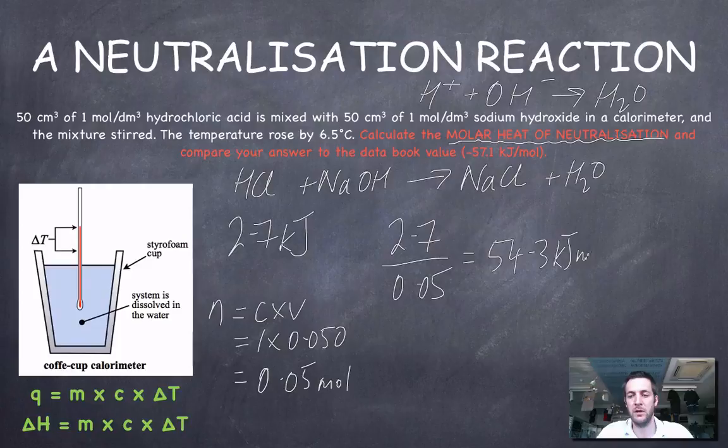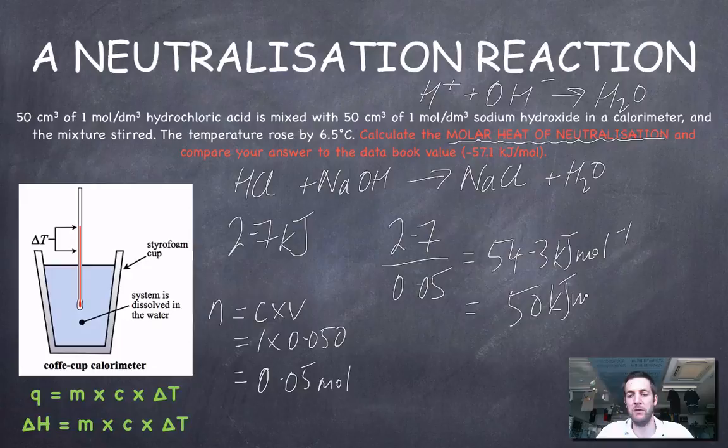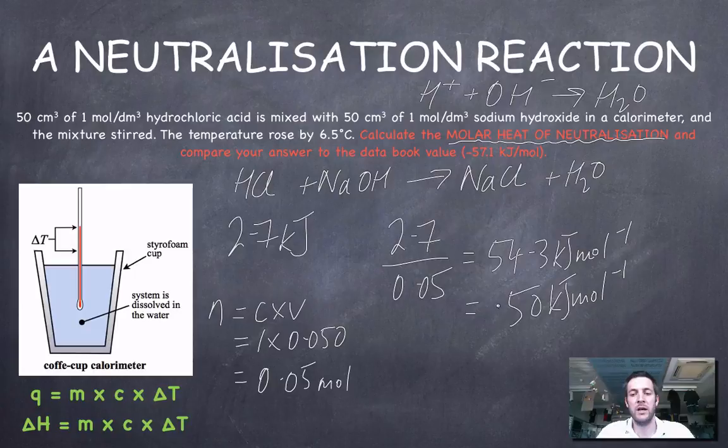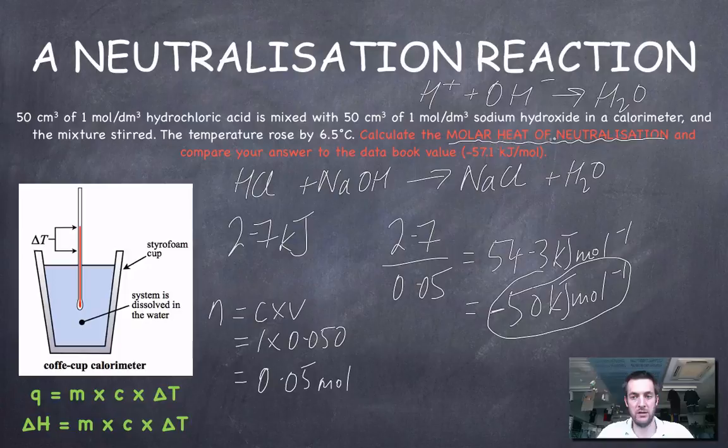But I'm going to give this to only one significant figure because I've got my weakest bit of data to one significant figure. So this is 50 kilojoules per mole. But remember, the temperature went up, so this had to be an exothermic change. And you might remember that neutralization reactions are always exothermic. So here is our final answer. The molar heat of neutralization is minus 50 kilojoules per mole.